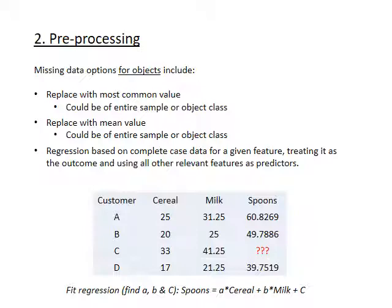The example here is different customers A, B, C, and D, and how much of each thing they buy — 25 units of cereal for customer A, 31.25 units of milk, and a lot of spoons. Each customer has a value for cereal, milk, and spoons, except customer C, whose spoon count is missing. One option: replace with the most common value — if the most likely number of spoons bought was 45, fill in 45 for customer C. We could also replace with the mean value of spoons bought.